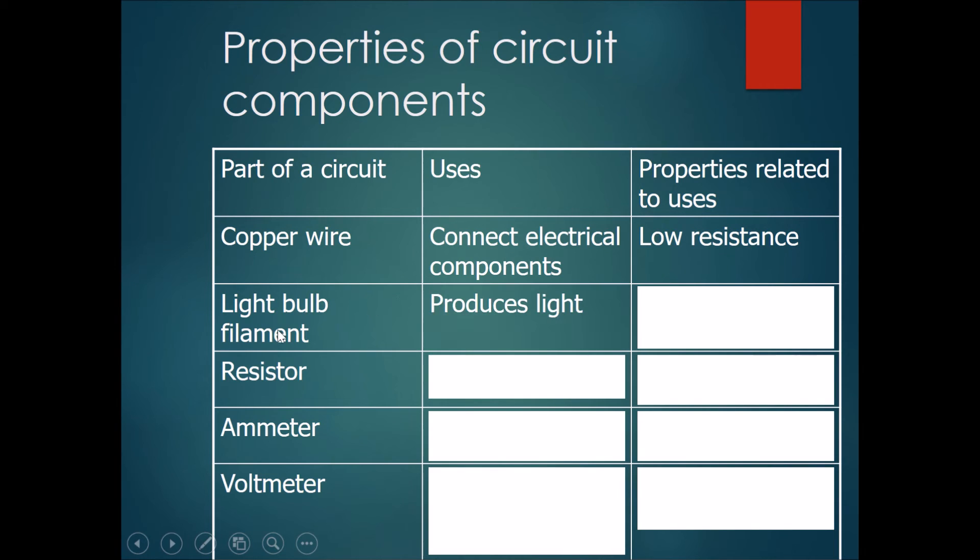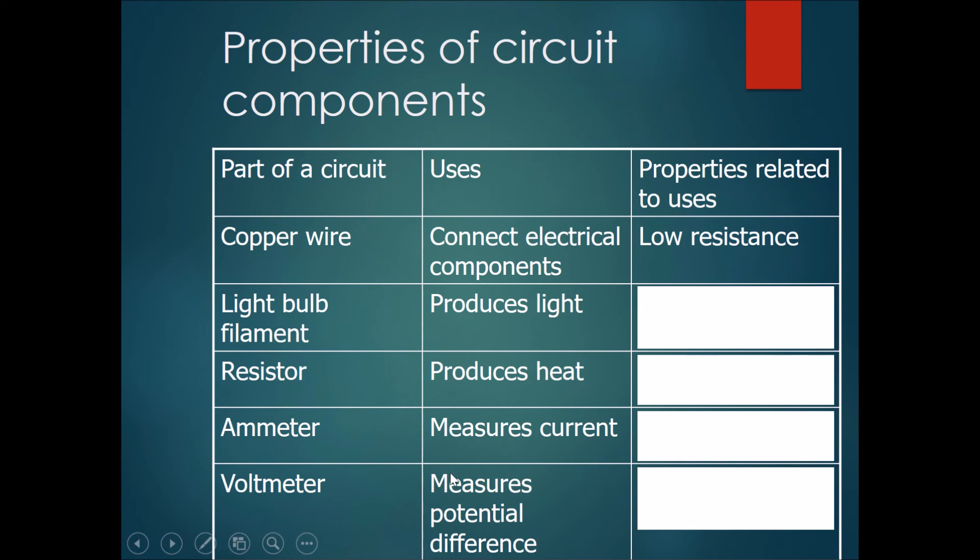Okay, now let's go through the answers. Light bulb filaments have to produce light. A resistor is used to produce heat. An ammeter is used to measure current. A voltmeter is used to measure potential difference.